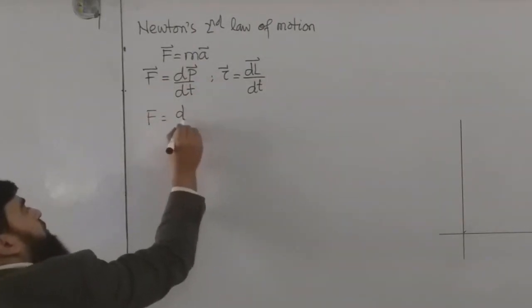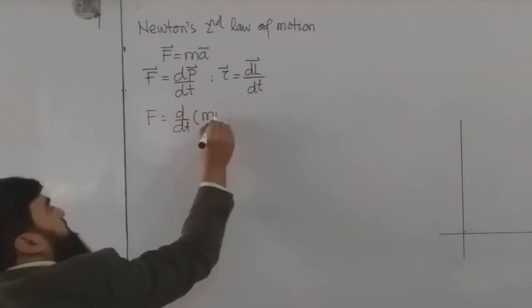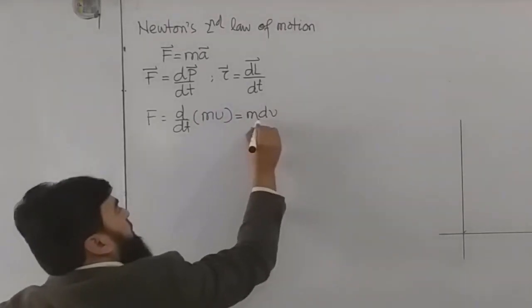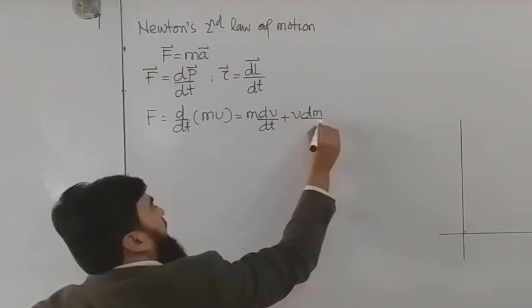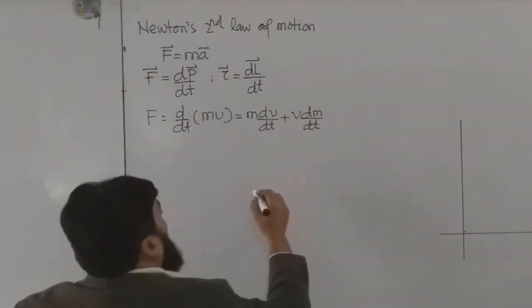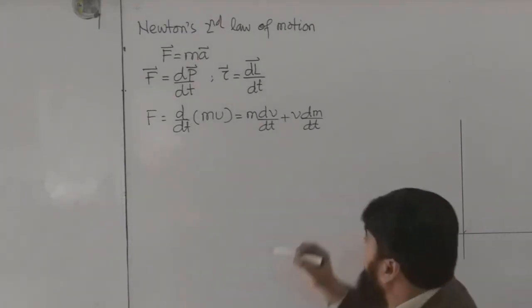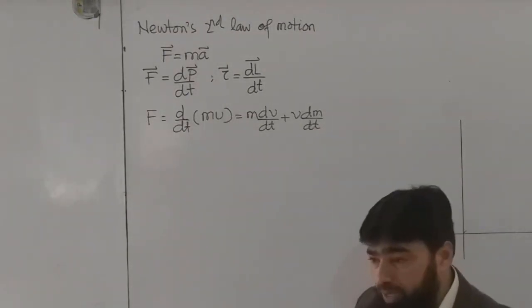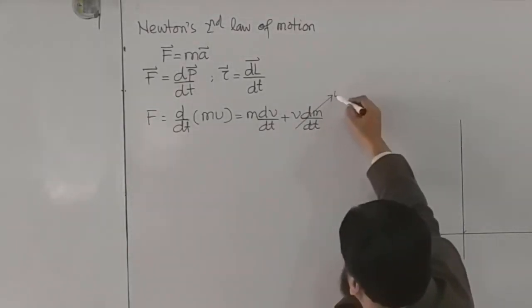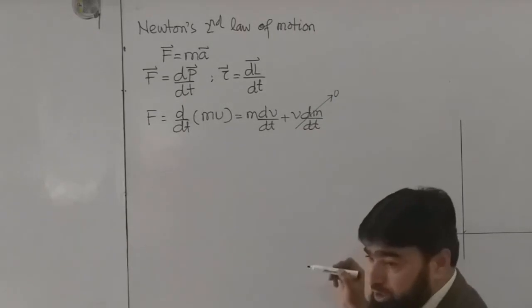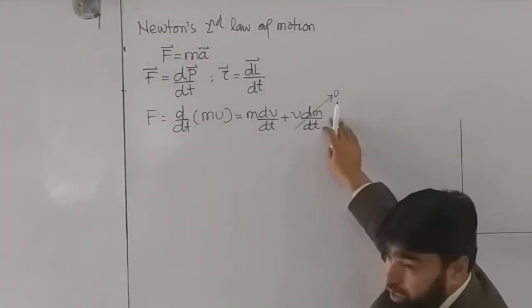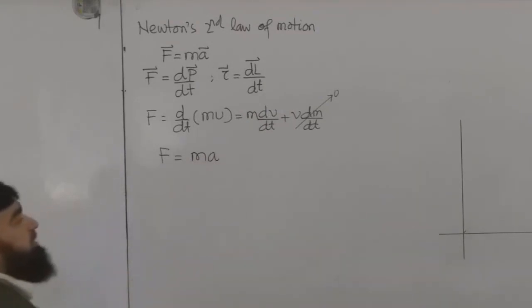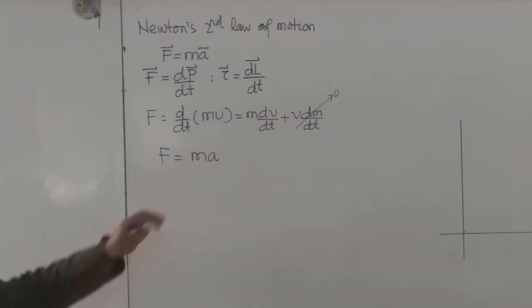So this I can write F equals D over DT, and this D I write MV. Now product rule, and this will be M DV over DT plus V DM over DT. Now if we are having a situation that our mass will not depend on time, means with time the mass will remain constant, then we will say that this term is going to zero because derivative of constant is zero. So it is this limiting condition. So it is this limiting condition that makes our law equals F equals MA. DV by DT is A. F equals MA. So this is the limited version.